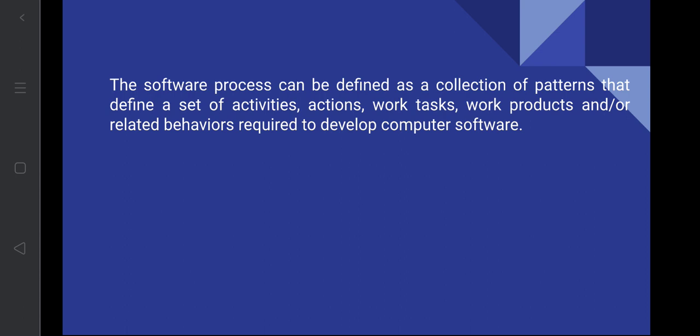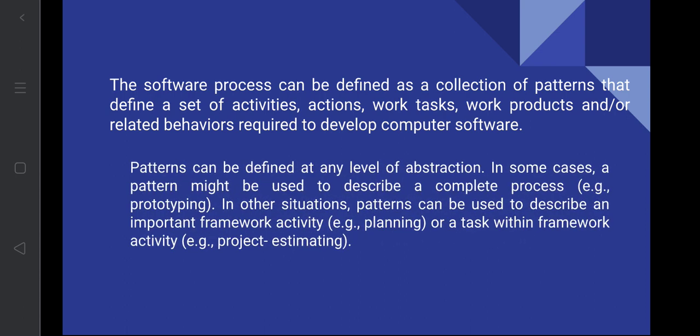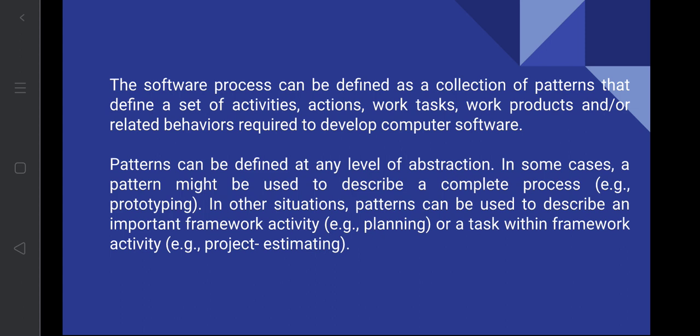A software process can be defined as a collection of patterns that define a set of activities, actions, work tasks, work products, and related behaviors required to develop computer software. Patterns can be defined at any level of abstraction — meaning they can be at a low level or a higher level, but at the level of abstraction, the whole details are not explained, only the components are mentioned.